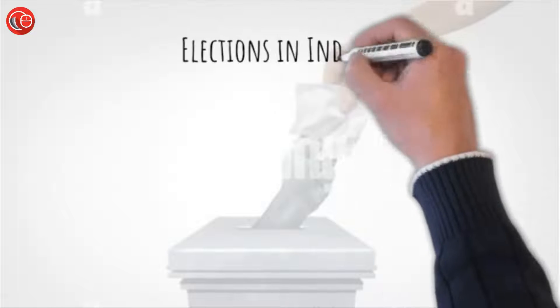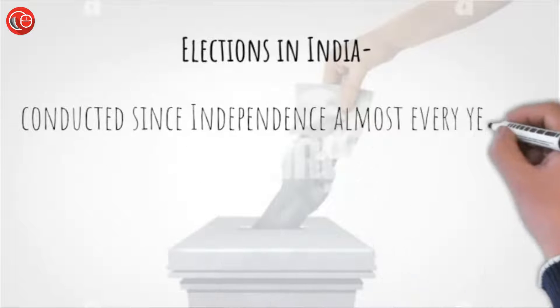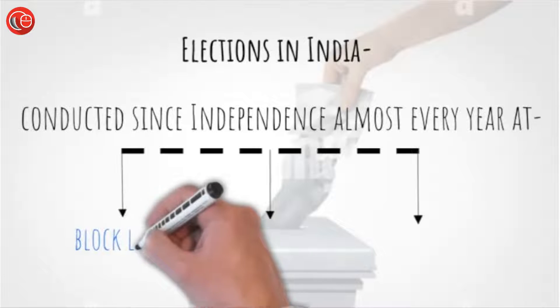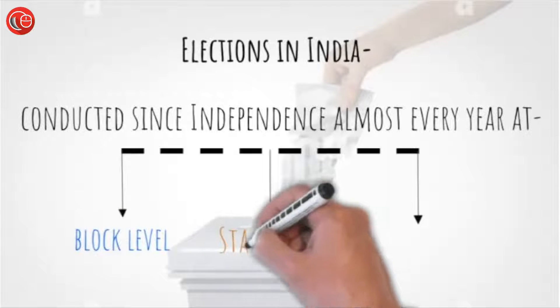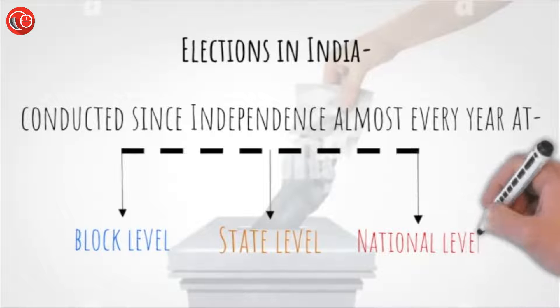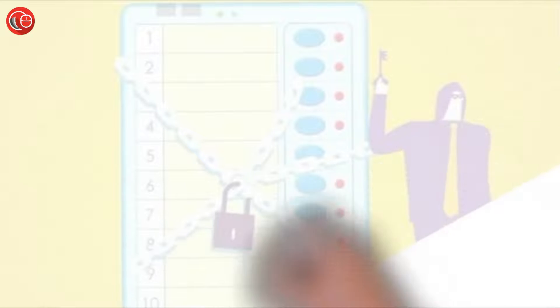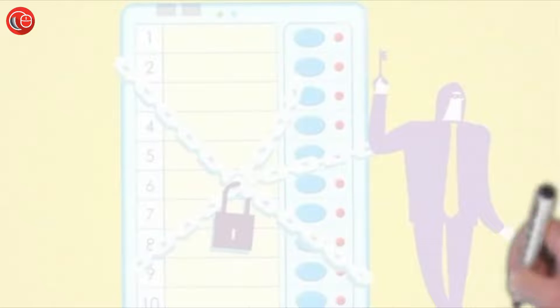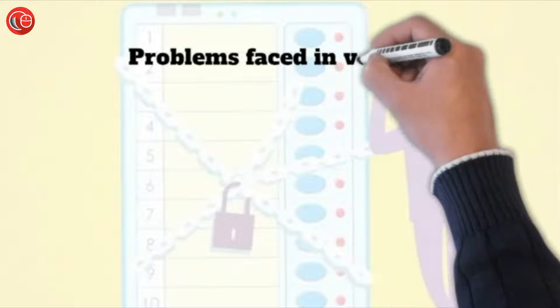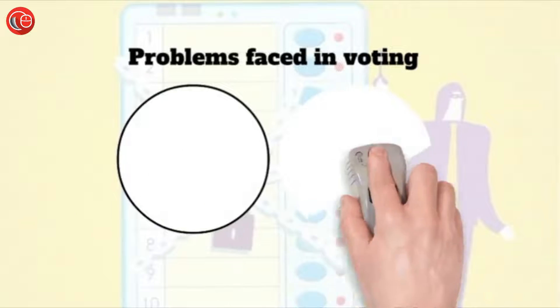The preamble of the constitution of India says that India is a republic and democratic country, which makes elections in India an inherent part of politics, and it has been conducted since independence almost every year at block level, state level or at national level. In India, elections give no less enthusiasm to people than any festival, hence to celebrate this festival of democracy, the main instrument is the ballot paper through which the voters cast their votes and elect their representatives.